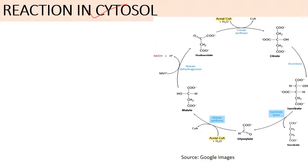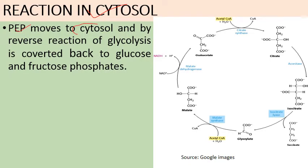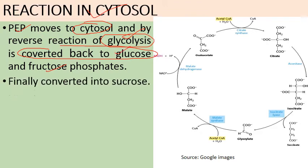Next are the reactions in the cytosol. For further processing of phosphoenol pyruvate, the required enzymes are present in the cytoplasm and not in the mitochondria, so PEP moves into the cytosol. By reverse glycolysis — since PEP was the second-last product of glycolysis — it is converted back to glucose and fructose phosphates, which are finally converted into sucrose, the important plant sugar.